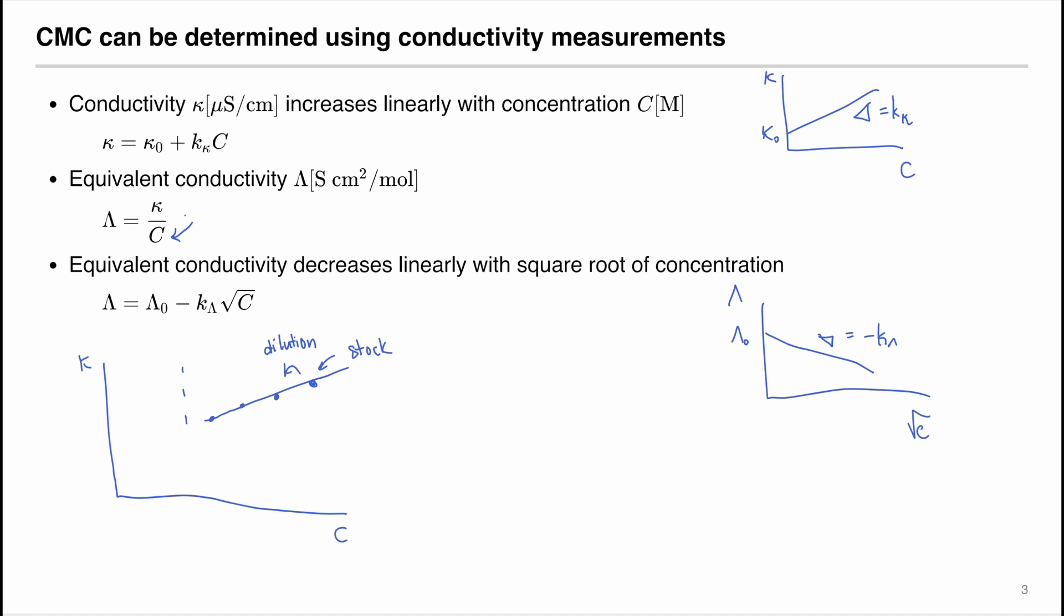However, at the critical micelle concentration CMC, the slope would change. The slope of the curve would change so that you see there is a distinct curve. So using those distinct slopes, we can locate the critical micelle concentration.